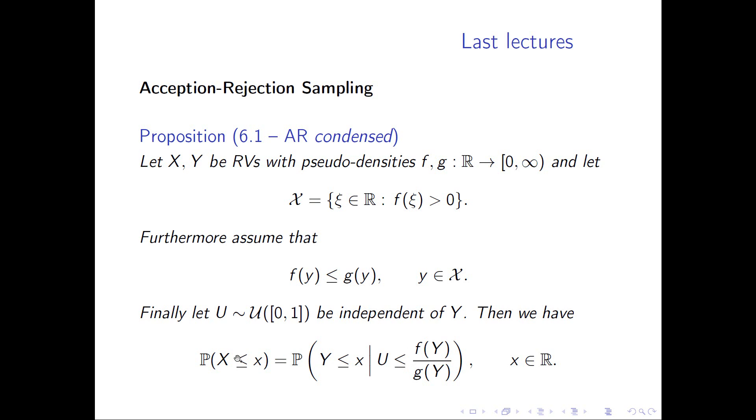Otherwise, we reject and do it again. In the last lecture, we had a long geometric derivation which nicely captures the idea. Here we have the compact version. This is acceptance-rejection sampling, and proving Proposition 6.1 is an exercise on the actual sheet.